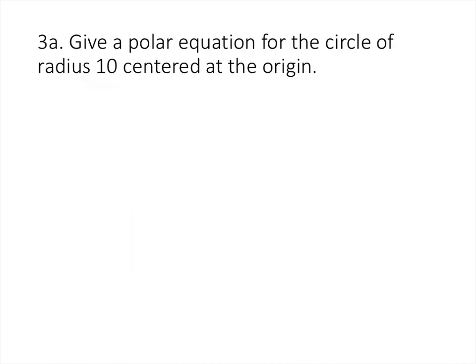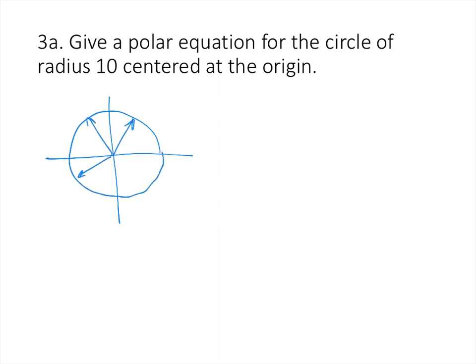The last part of the problems is finding polar equations for simple curves. Circles centered at the origin are easy to describe in polar coordinates: for a circle of radius 10 centered at the origin, no matter what theta value you consider, the radius is always 10. So the polar equation is simply r equals 10.